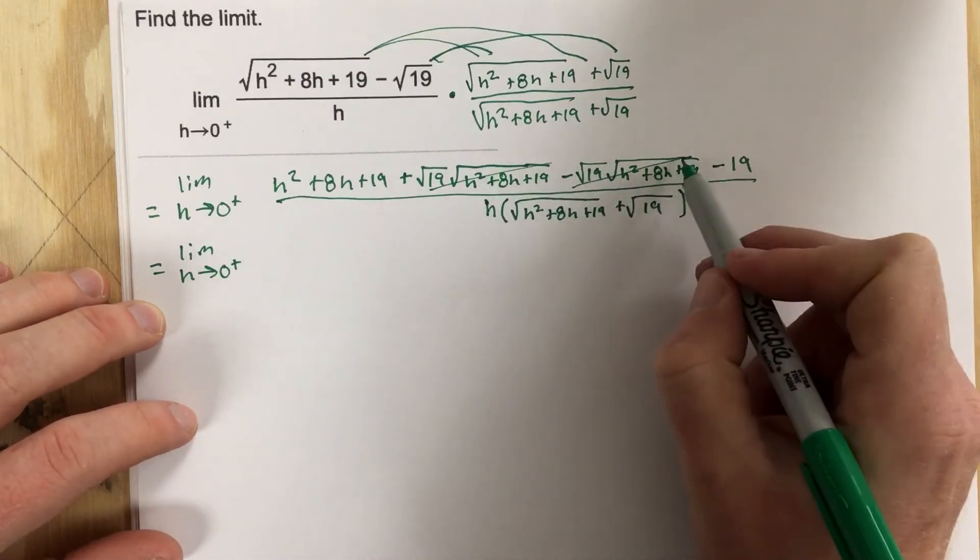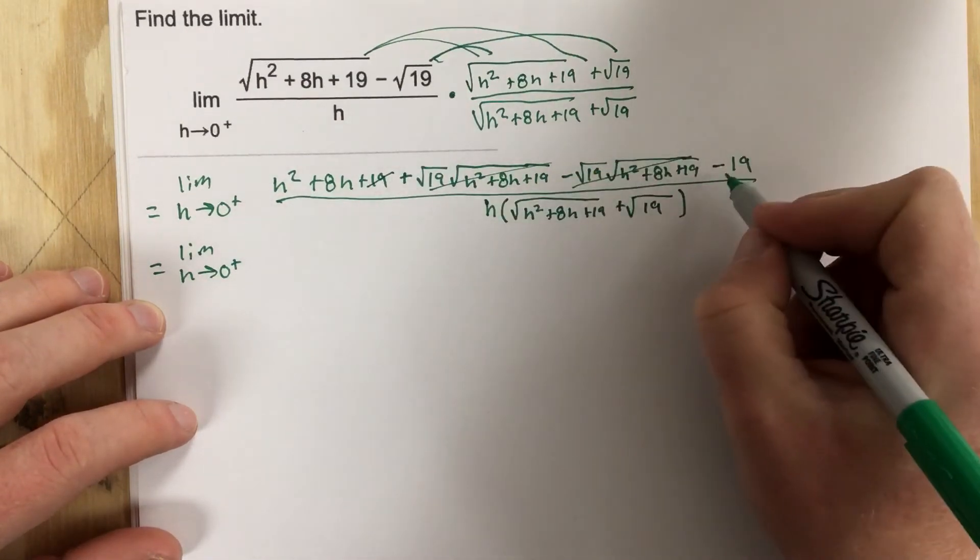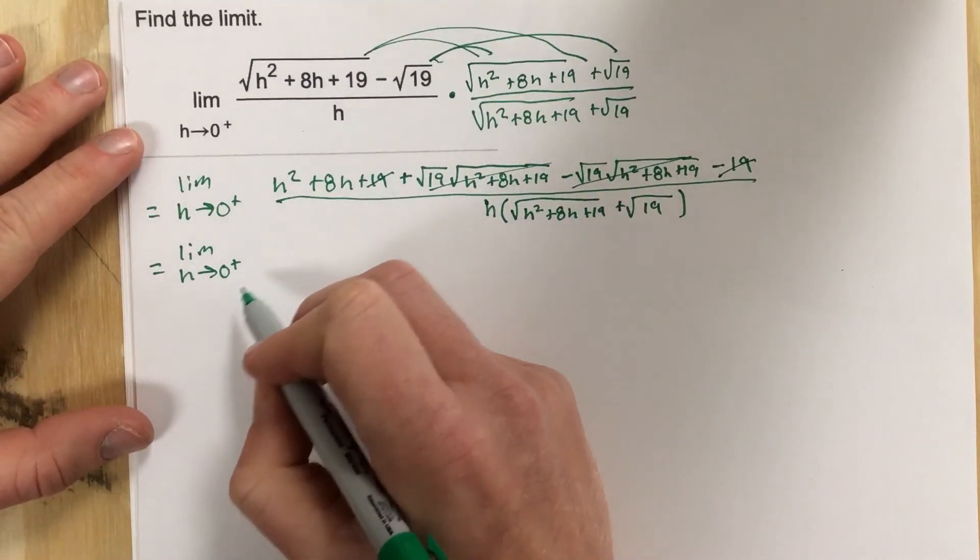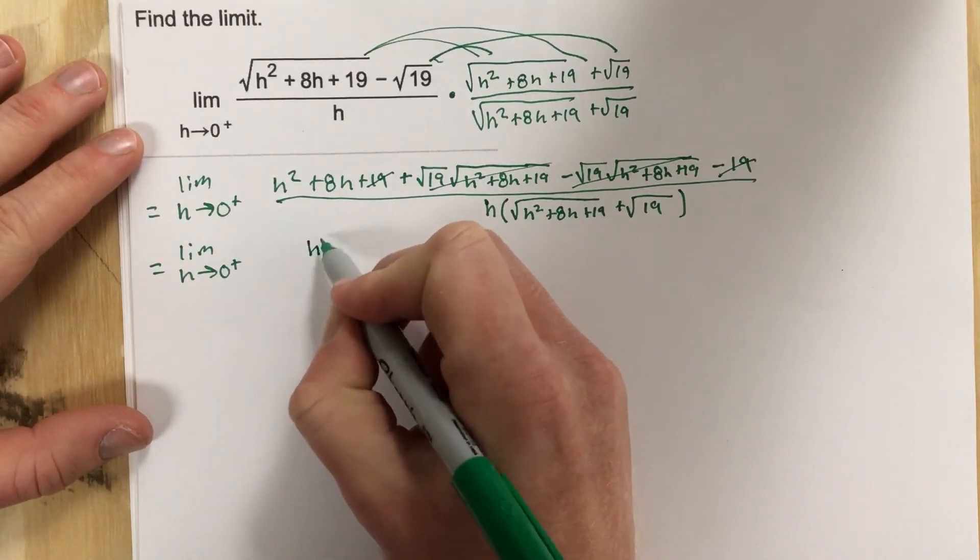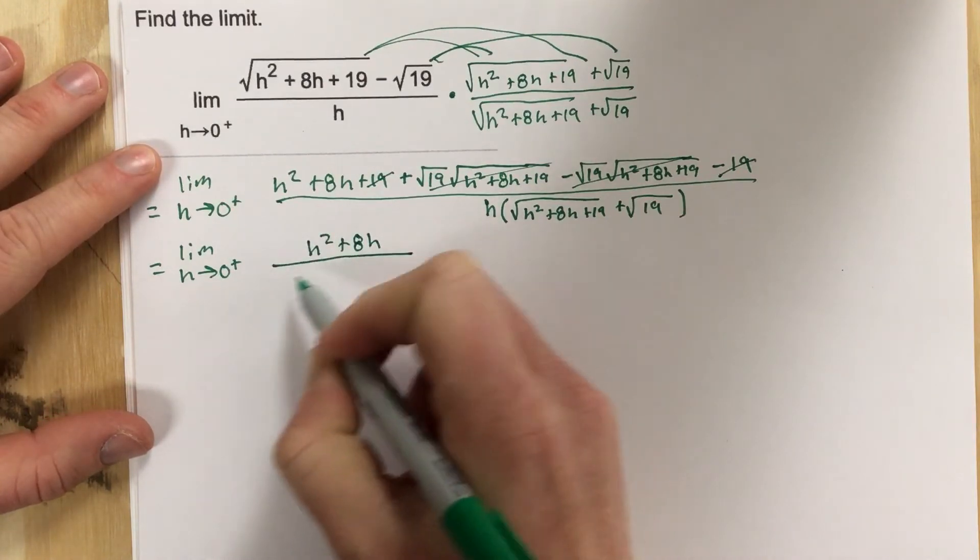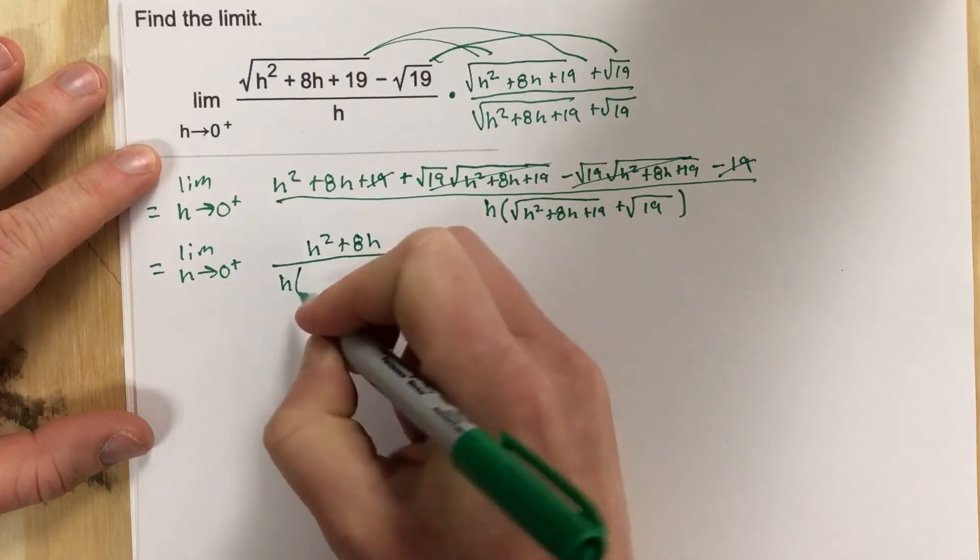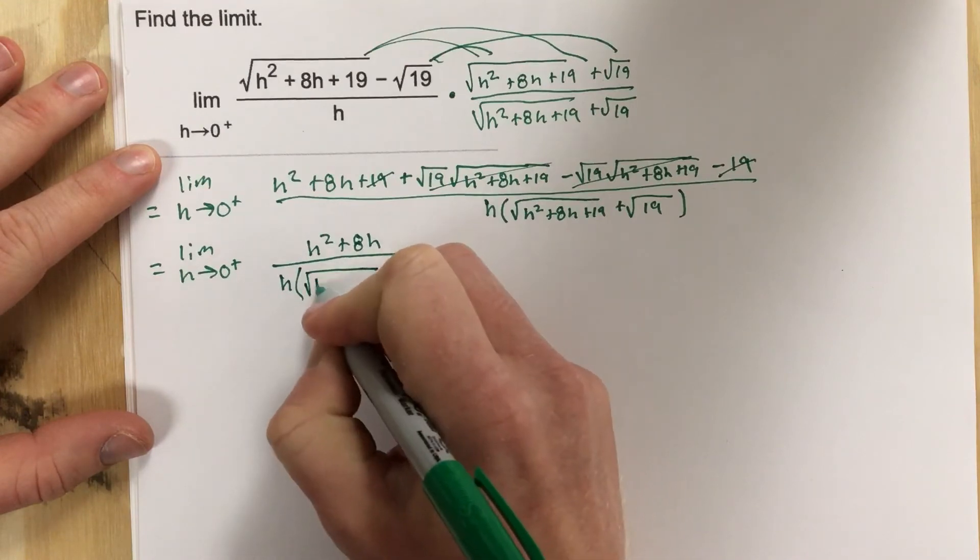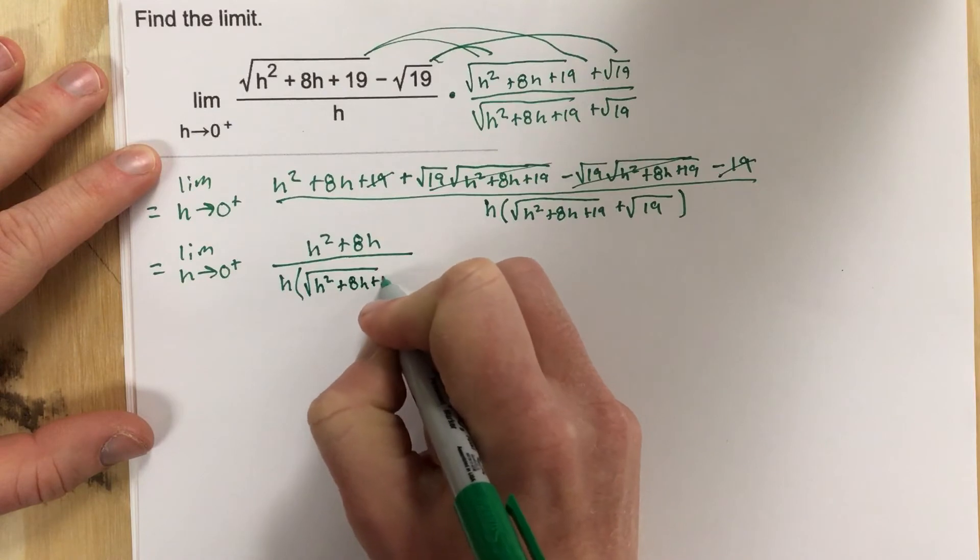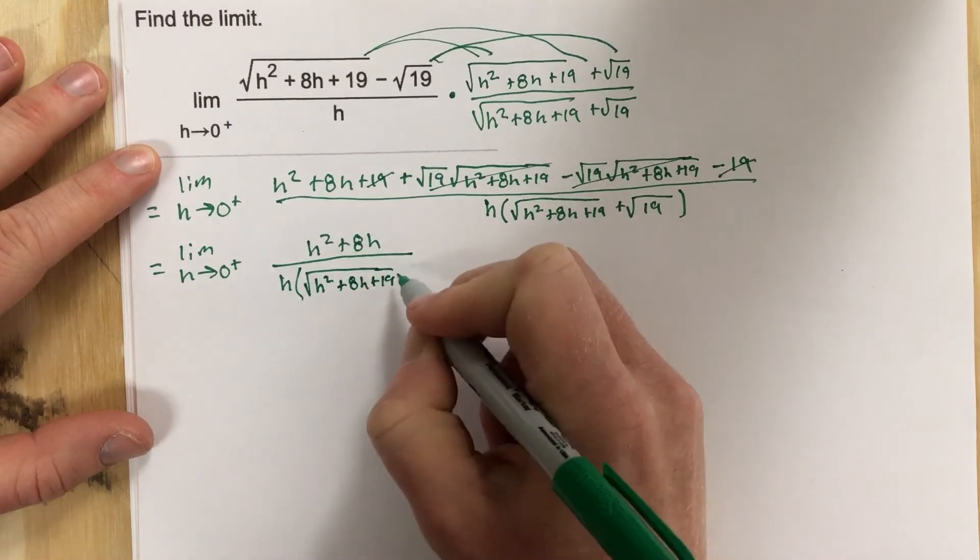So these two things cancel. The 19 and the negative 19 also cancel. And it leaves me with h squared plus 8h on top. And that's all over h root h squared plus 8h plus 19 on the bottom plus root 19.